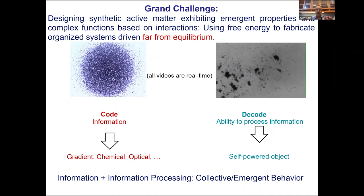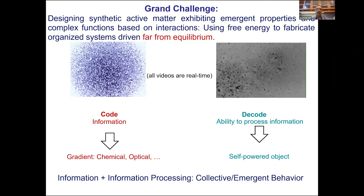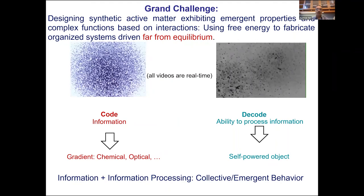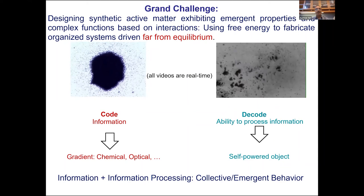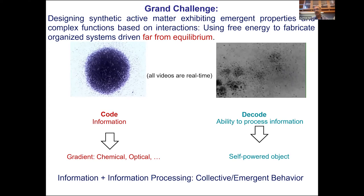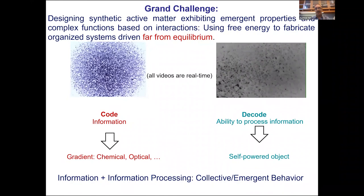To achieve this, you need two distinct things. One is something that can work on information—typically self-powered objects that harvest energy locally. The other is information in the form of code, which in our case takes the form of chemical gradients, sometimes optical gradients.